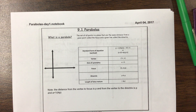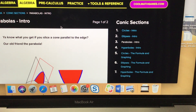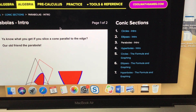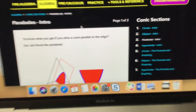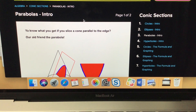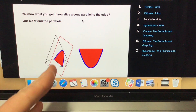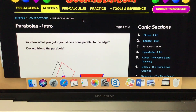This is the first video on parabolas as part of conic sections. Each conic section has a definition in terms of a cone and in terms of distance. When we start talking about parabolas, notice what they've done is they've sliced the cone parallel to an edge. And when we slice the cone parallel to an edge, we get a parabola. That's the cone definition.